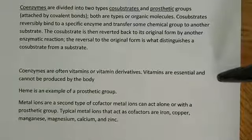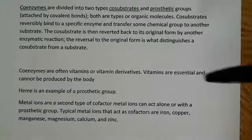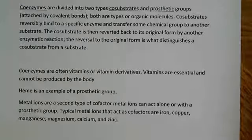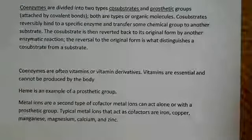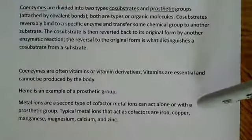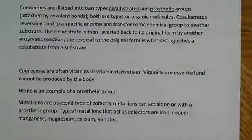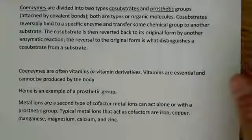Coenzymes are often vitamins or vitamin derivatives. Vitamins are essential and cannot be produced by the body. Heme is an example of a prosthetic group — you might remember that from hemoglobin or from cytochromes, which are involved in the electron transport chain and the movement of electrons between the different respiratory complexes. Metal ions are a second type of cofactor and can act alone or within a prosthetic group. Typical metal ions that act as cofactors are iron, copper, manganese, magnesium, calcium, and zinc.